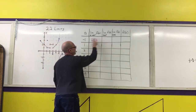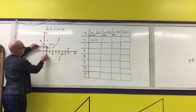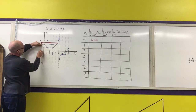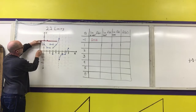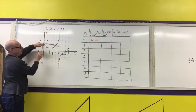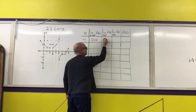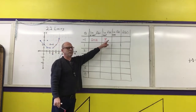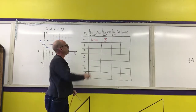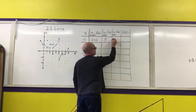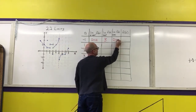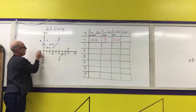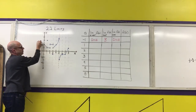Next, we approach -1 from the right. As we follow the graph approaching -1 from the right on the x-axis, the y-value gets closer and closer to 3. So the limit from the right is 3. For the two-sided limit to exist, both one-sided limits must exist and be the same number. Since the left-side limit does not exist, the two-sided limit also does not exist. When we evaluate f(-1), the value of the function is 3.